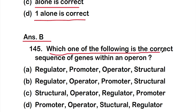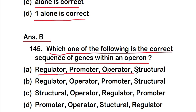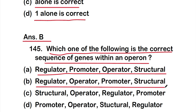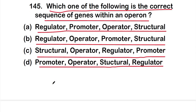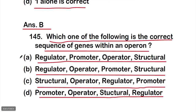Question 145: Which one of the following is the correct sequence of genes within an operon? The correct answer is option A — the sequence is: regulator, promoter, operator, and structural genes.